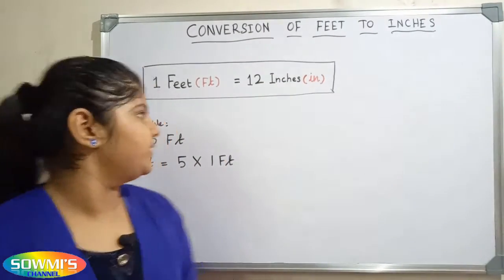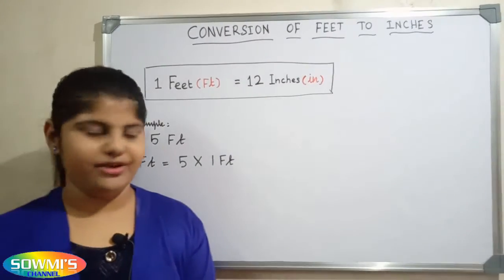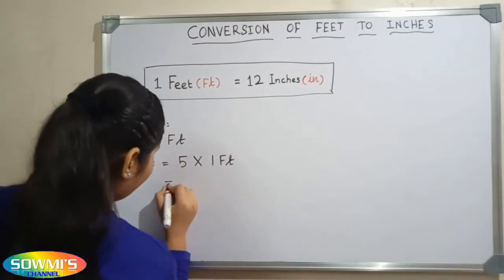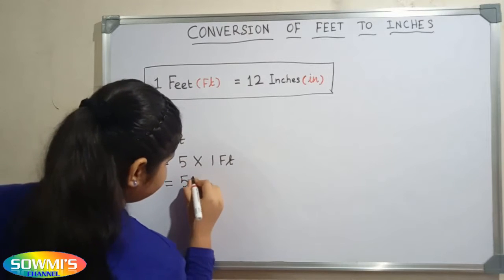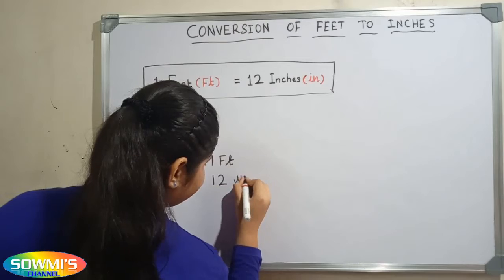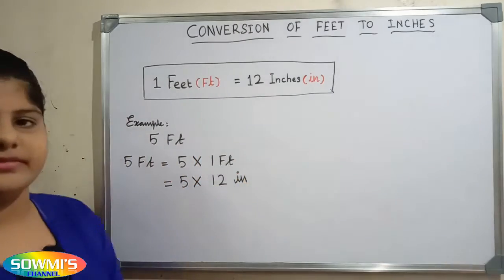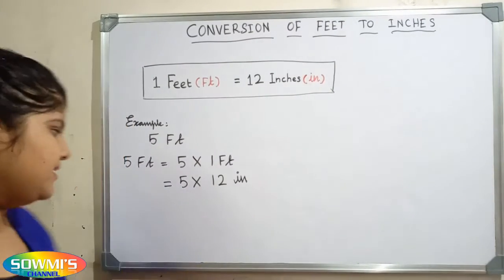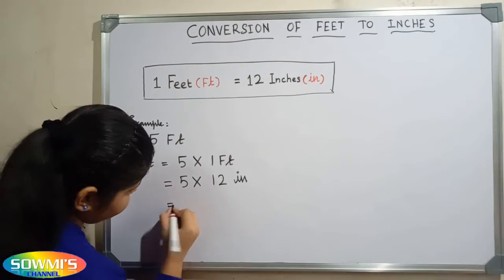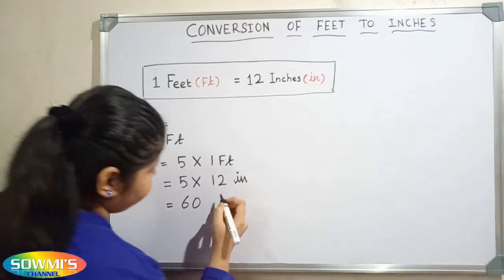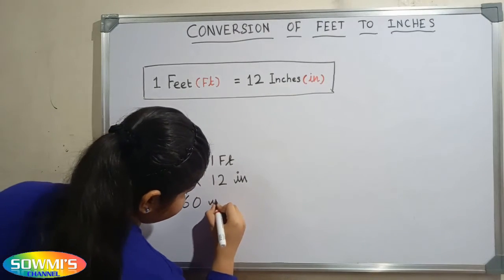Now we have to substitute 12 inches in the place of 1 feet, so 5 times 12 inches. Now we have to multiply 5 and 12. 5 times 12 is 60, so the answer is 60 inches.